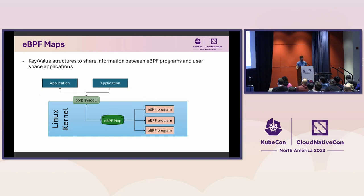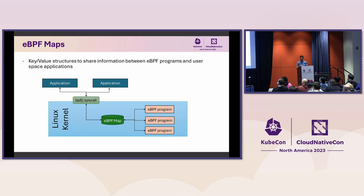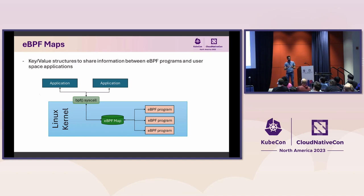Another important concept: with BPF programs we can capture information from the kernel, but we need a place to store that information. That is what BPF maps are for. We can think of maps as key-value structures used to share information between different BPF programs and also between BPF programs and user-space applications. The BPF program runs, grabs information from the kernel, stores it in BPF maps, and then our user-space application polls that data.